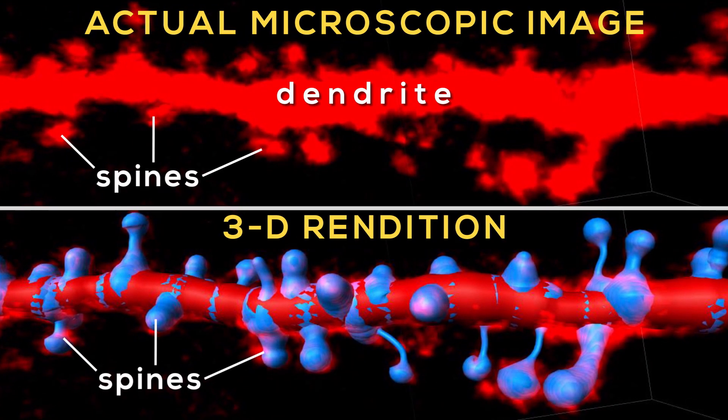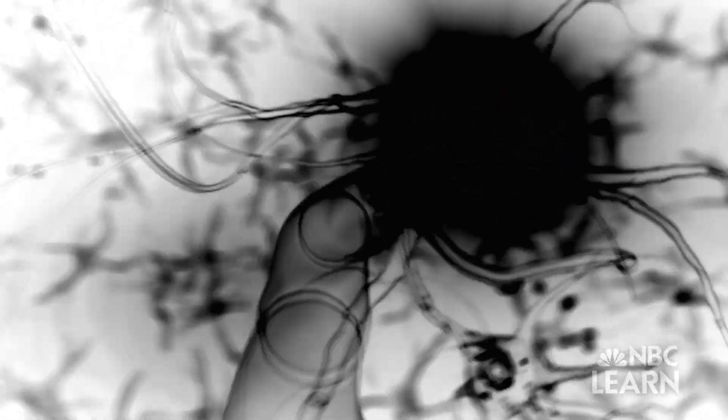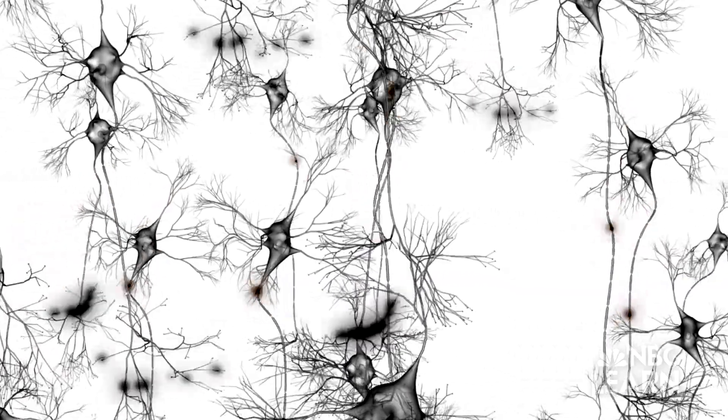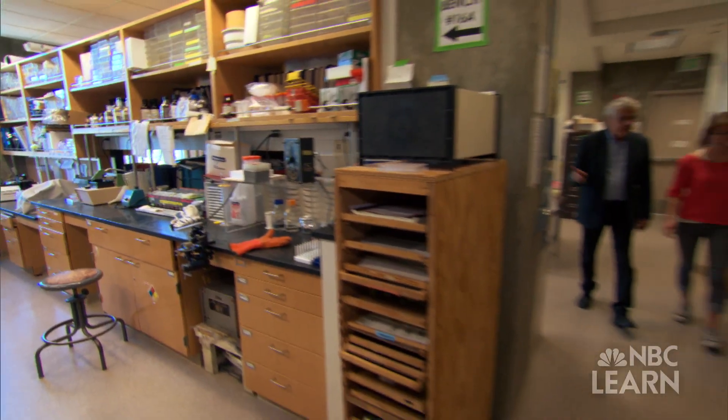Lynch explains this is because the dendritic spines are changing shape, allowing for stronger synaptic communication. When it sends that message, this spine, this dendritic receiver, morphs. And if everything goes right, it will morph into a state that forever afterwards, when the message comes, it generates a bigger voltage.